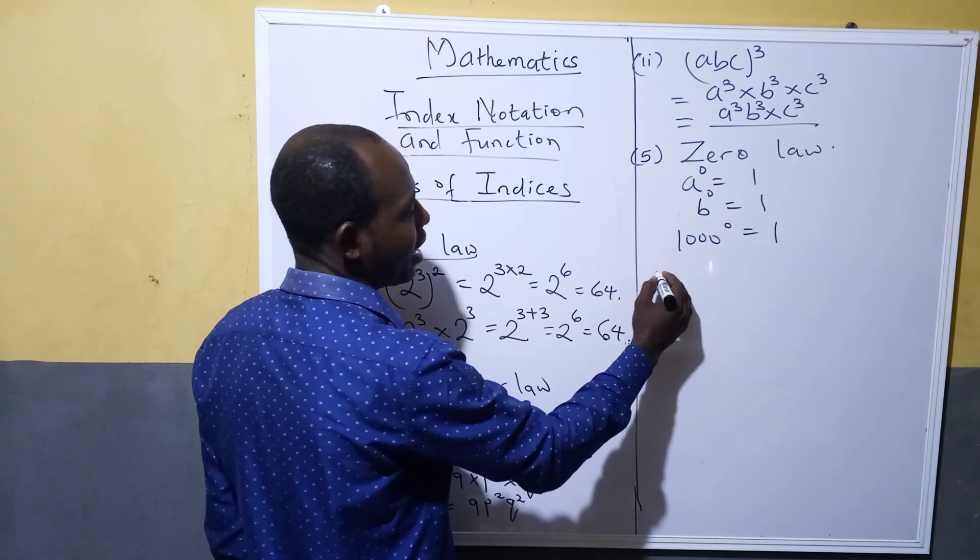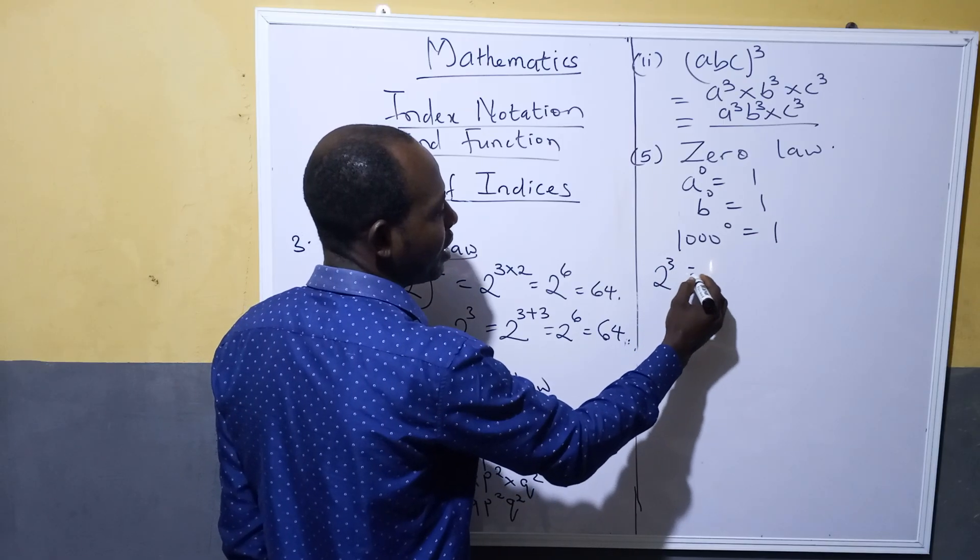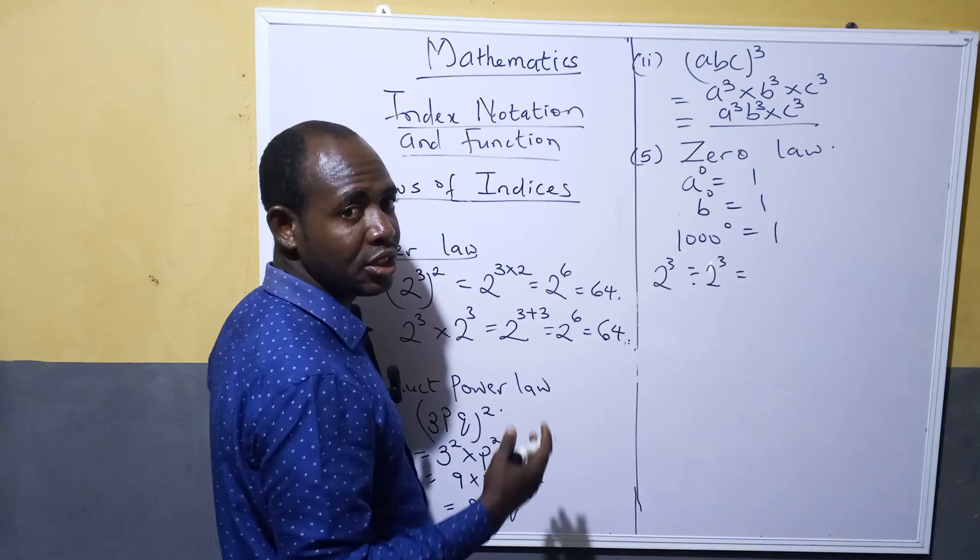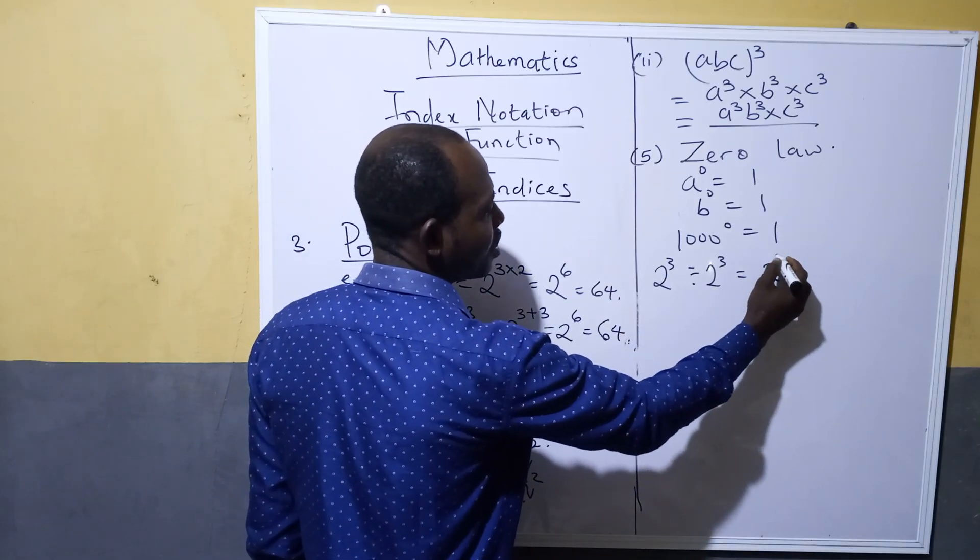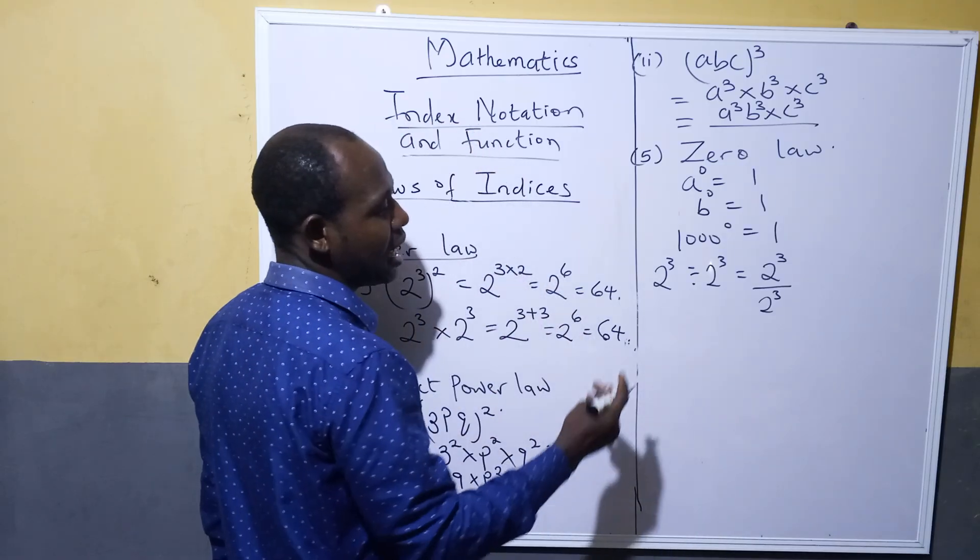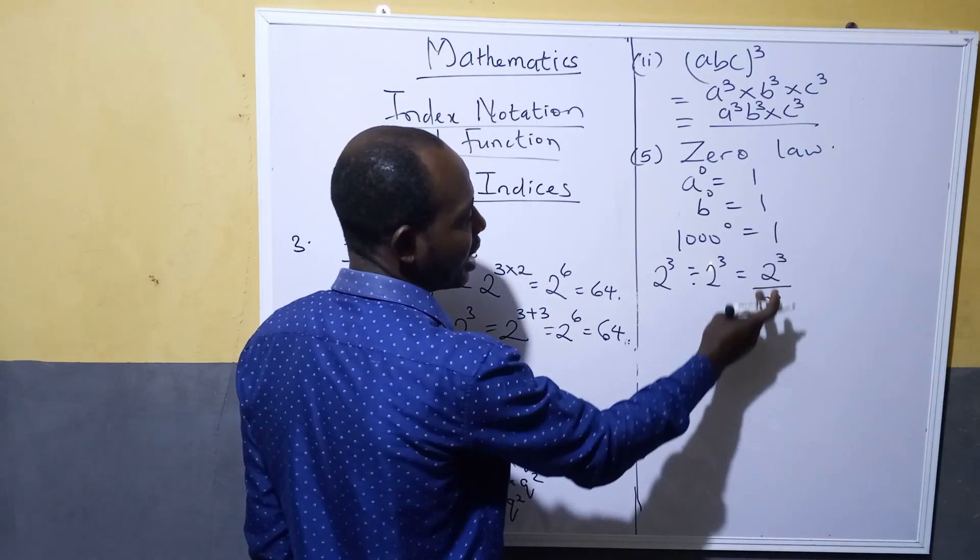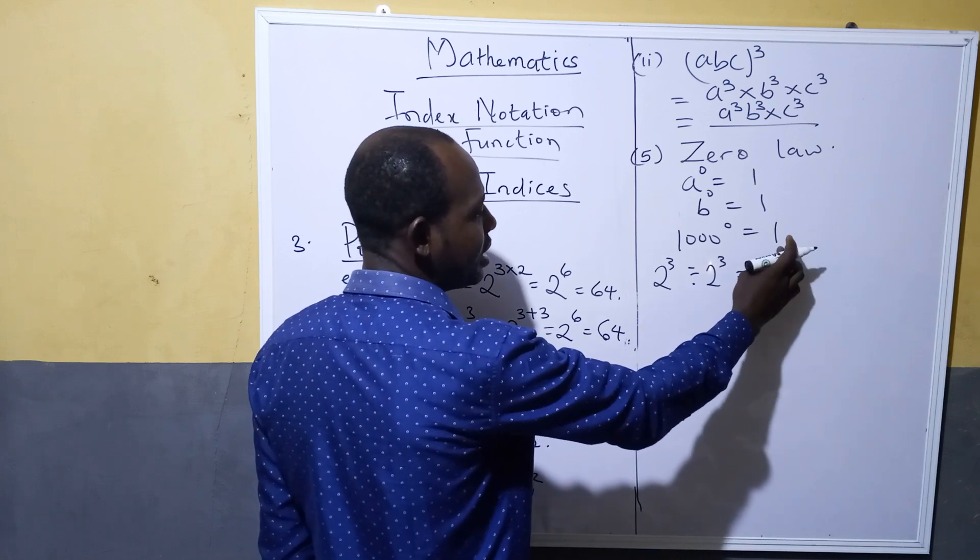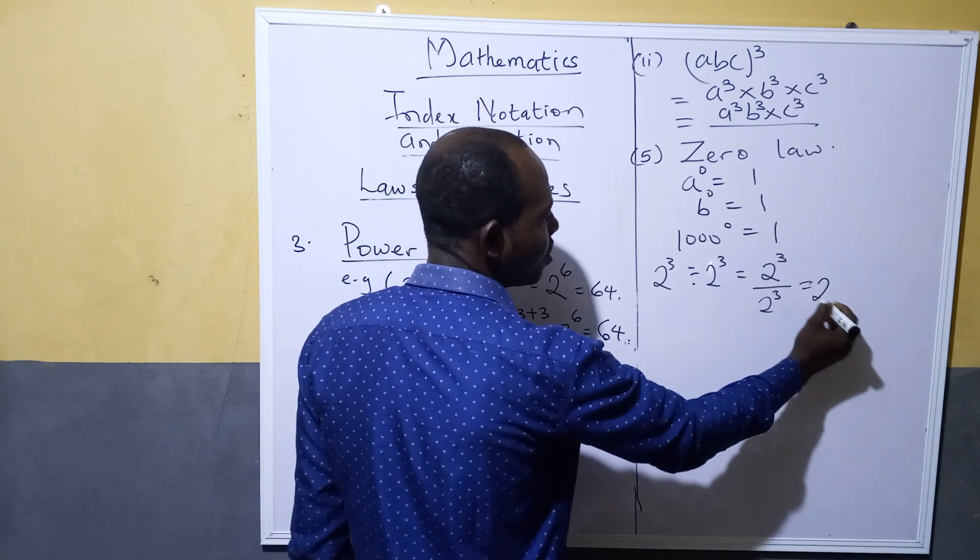Now if you have it this way, like 2 to power 3 divided by 2 to power 3, we are going to adopt the division law. Now 2 to power 3 over 2 to power 3, division law states that if you have numbers whose bases are the same, subtract the divisor from the dividend.